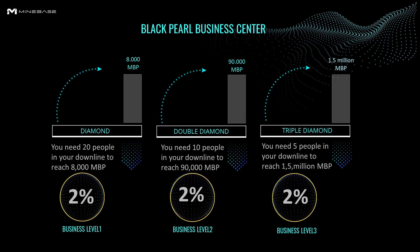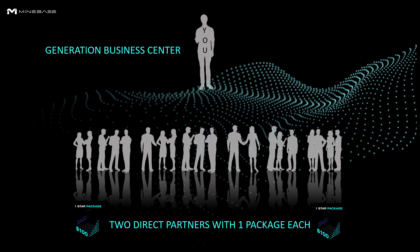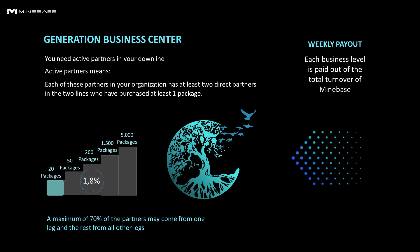In the Generation Business Center, you will receive additional weekly commission if you have at least 20 active partners. Active means partners in your downline who have two direct partners with one package. You stay in the first business level until you reach the next one. If you reach the highest level, you stay forever.